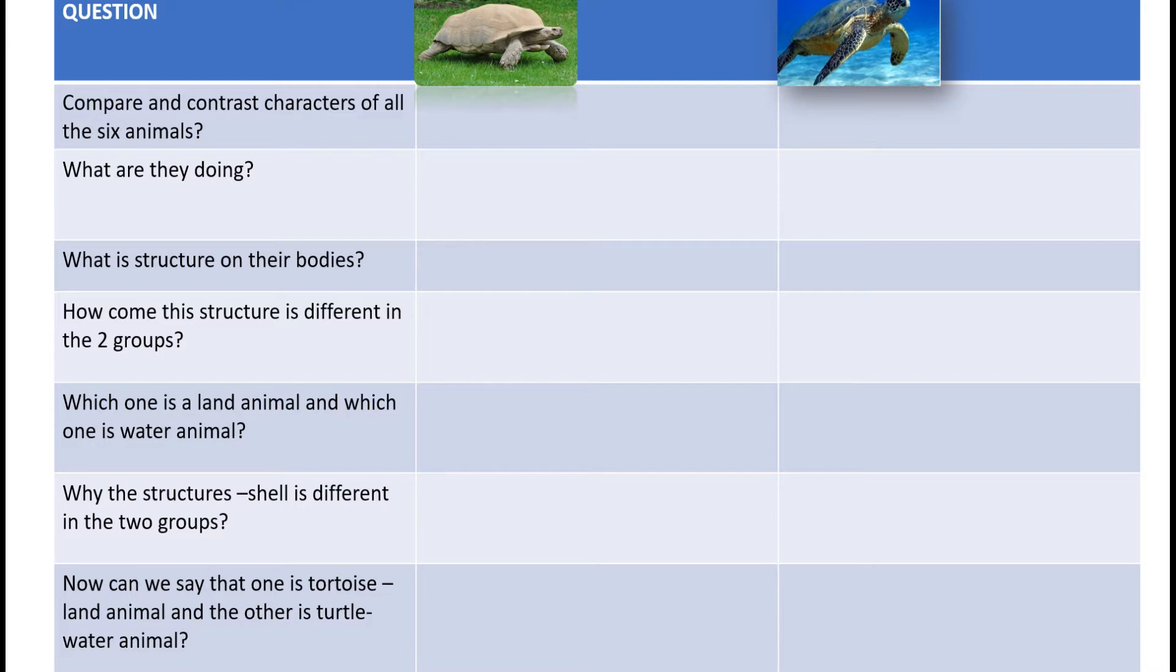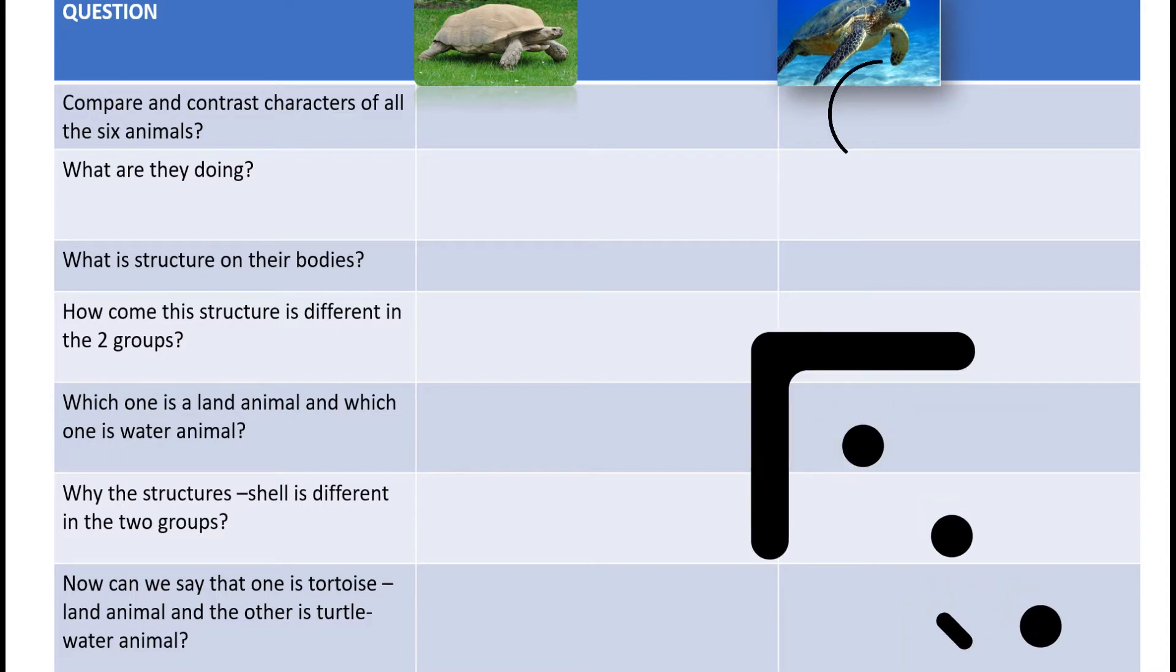We can see that this is a tortoise and this is a turtle. Tortoise walks on land, turtle swims in water. What is the structure on both the bodies? This is a shell. The shell is of different shape in land tortoise - the shape of shell is different in both organisms.